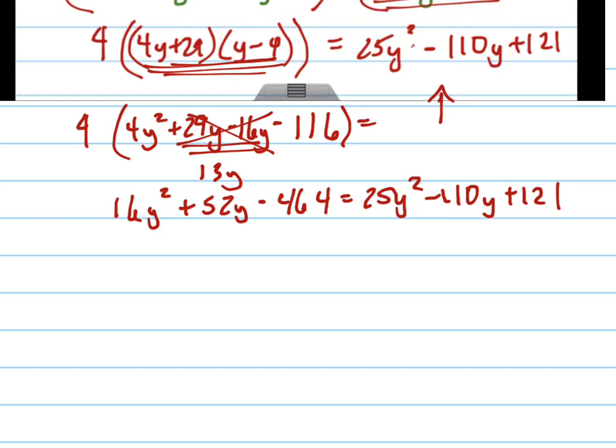And it gives me 16y squared plus 52y minus 464 equals 25y squared minus 110y plus 121. This is a big mess, I know, but that's why I'm showing you the problems in all the steps so you can see if you're doing it right.